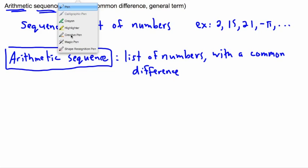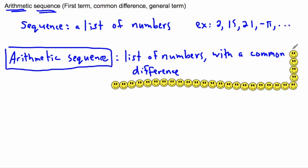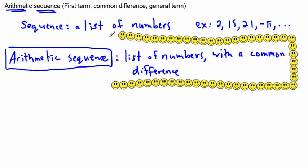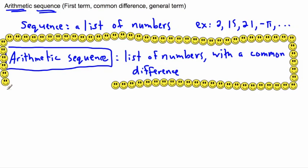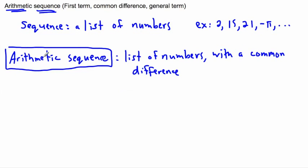So I'm maybe going to make this in a different color. Maybe I'll put little happy faces around it or something like that. So this is what you need to know in order to know if something is an arithmetic sequence. Alright so arithmetic sequence, list of numbers, common difference. That's how they work.